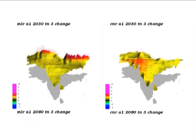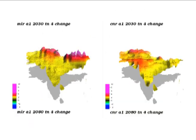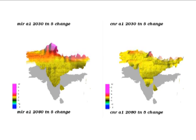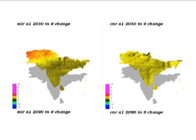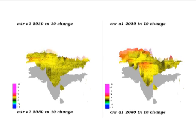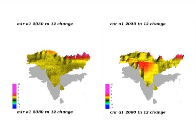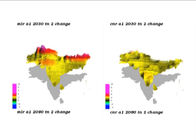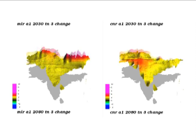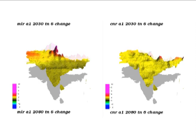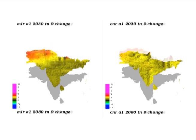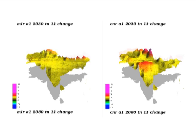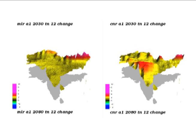One important point to note is that climate models do not give you the same results for the future. Compare the upper right for the CNR climate model with the upper right for the MIR model — the temperature changes, while similar on average, show significant differences for particular places in South Asia. Different models give you different results for both temperature and precipitation.